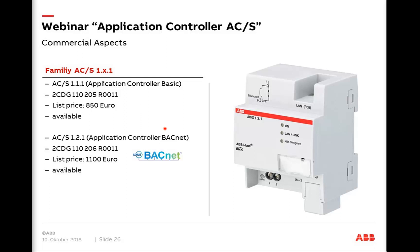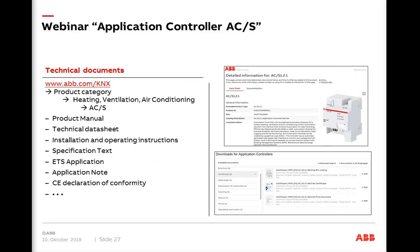Components have been available since last week, on stock, including all software and documentation. One version without and one with BACnet interface. On our homepage you'll find everything including the manual — and yes, it really is 500 pages, but every function is explained in detail. The automation ASM part is around 150 pages, corresponding to the ABAS documentation.